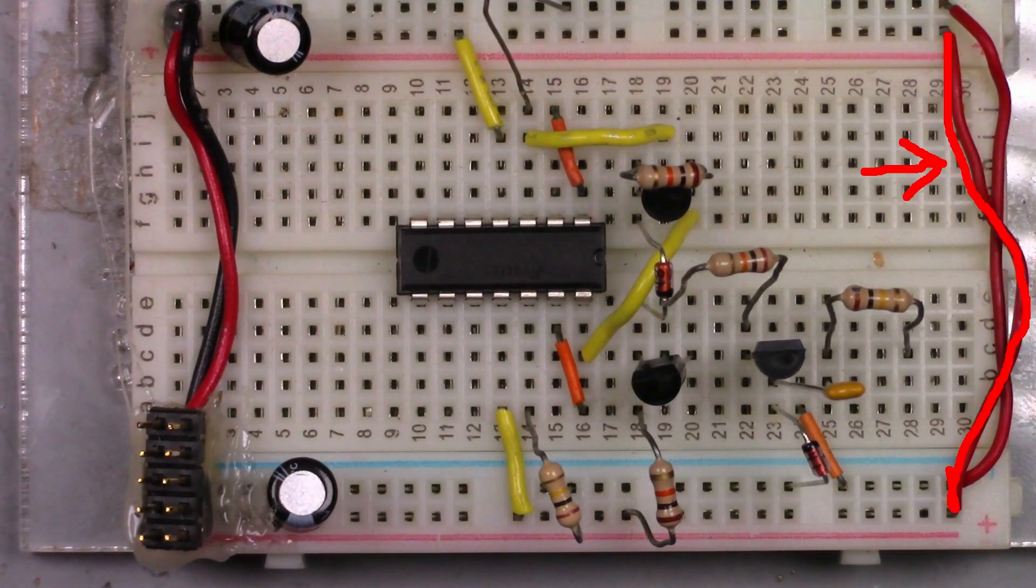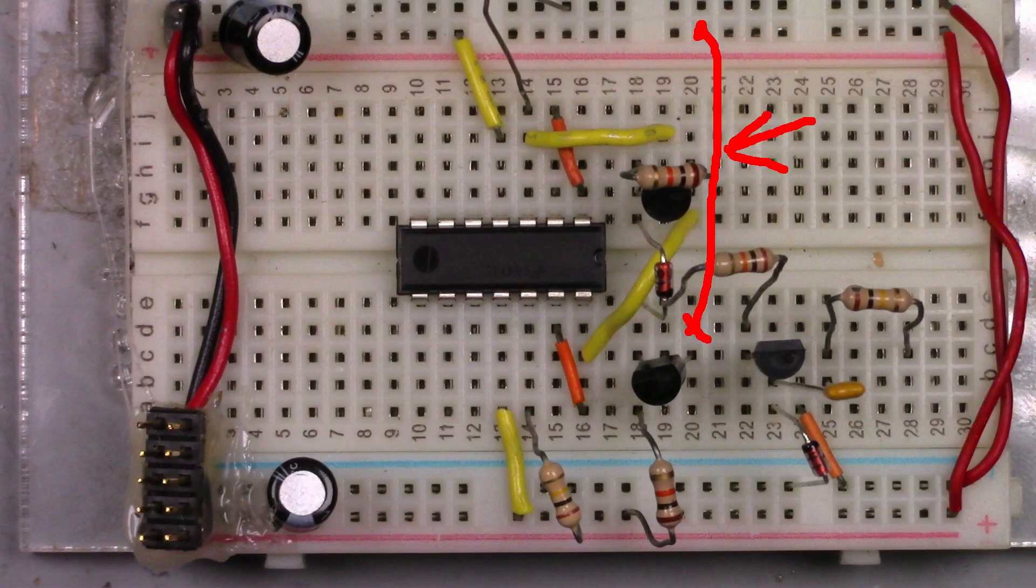This red wire was a mistake. It should be connected from positive 12 volts to the emitter on the 3906. It was fixed before connecting power.